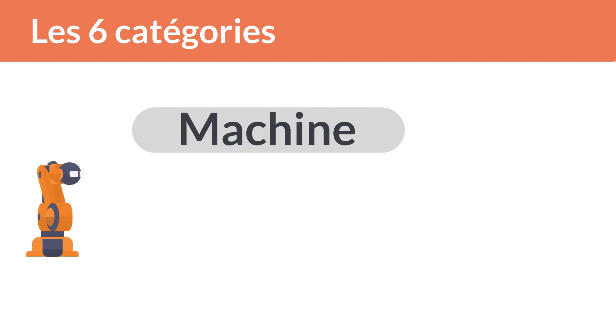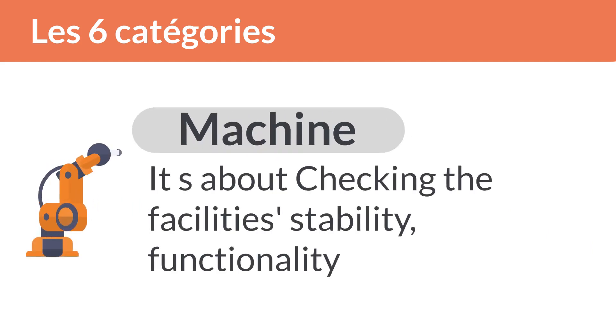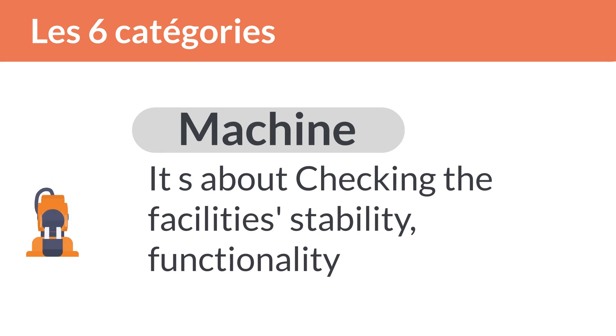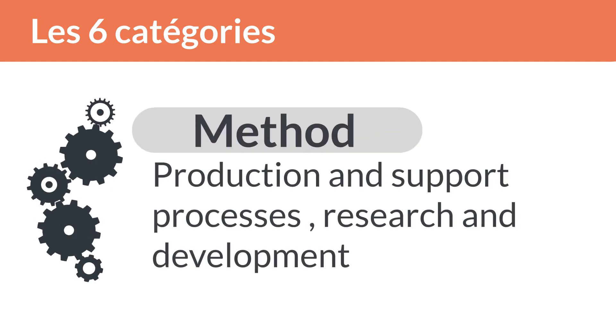Machines is about checking the facilities, stability, and functionality. Methods covers production and support processes, research, and development.